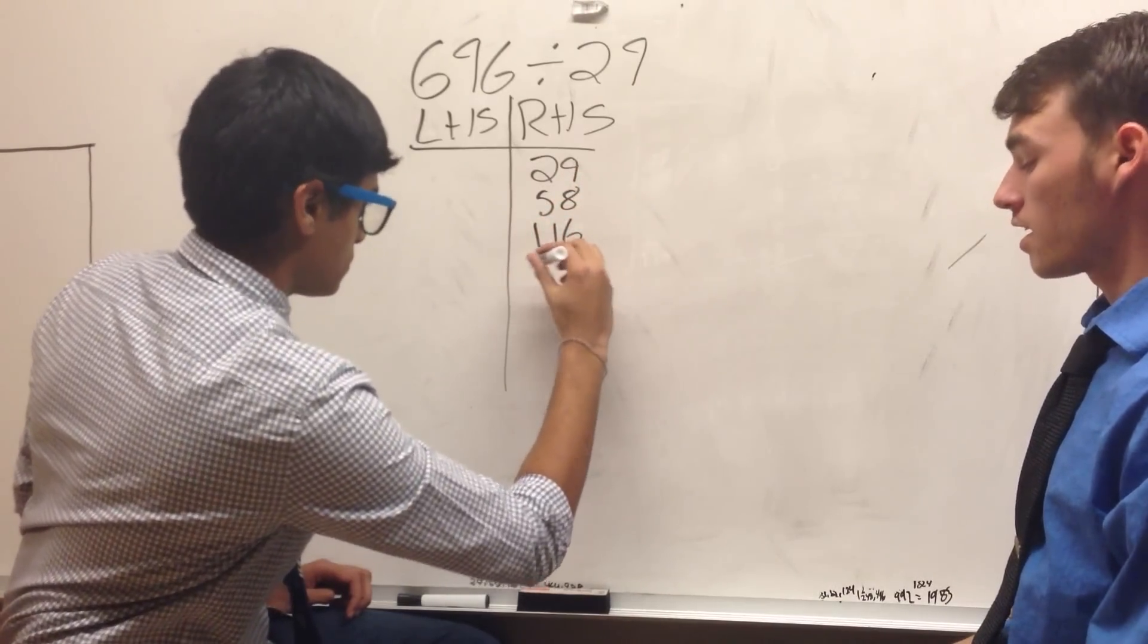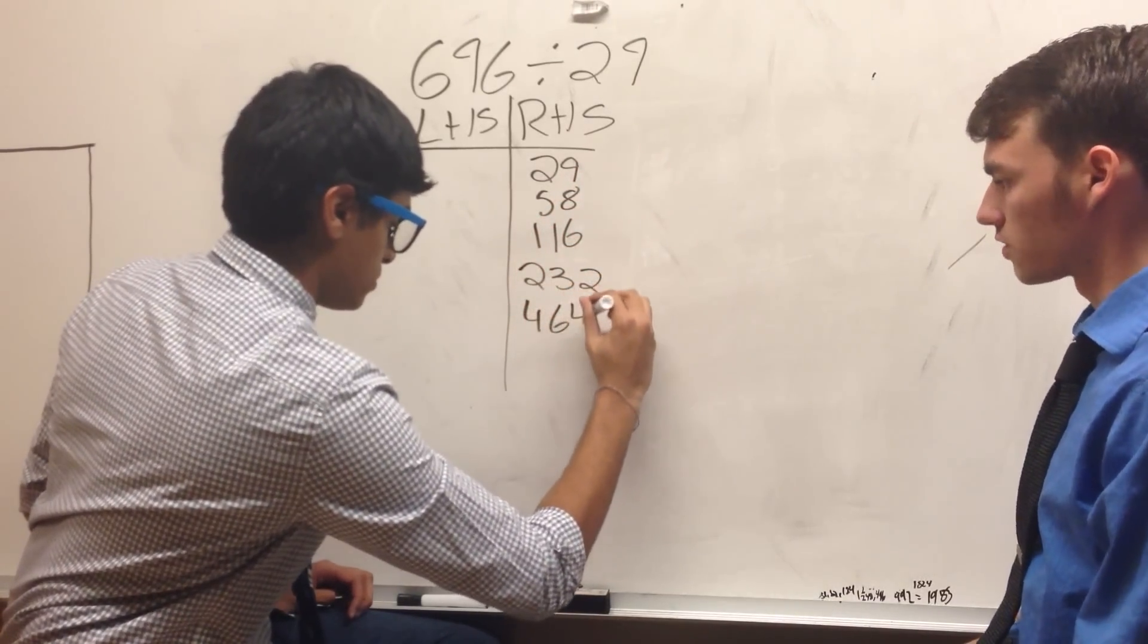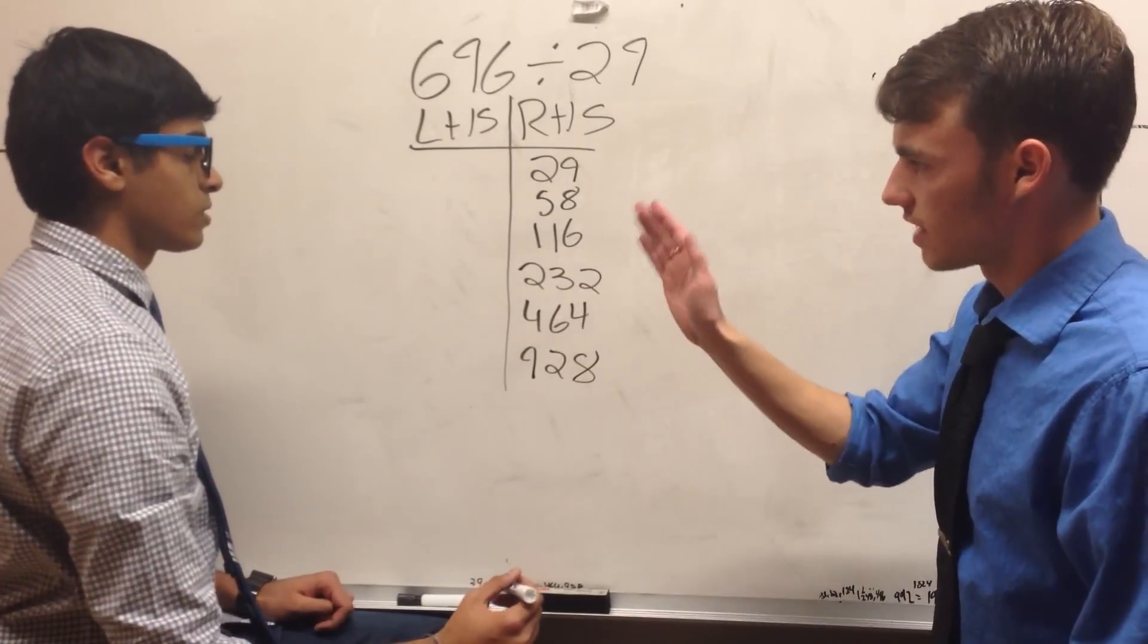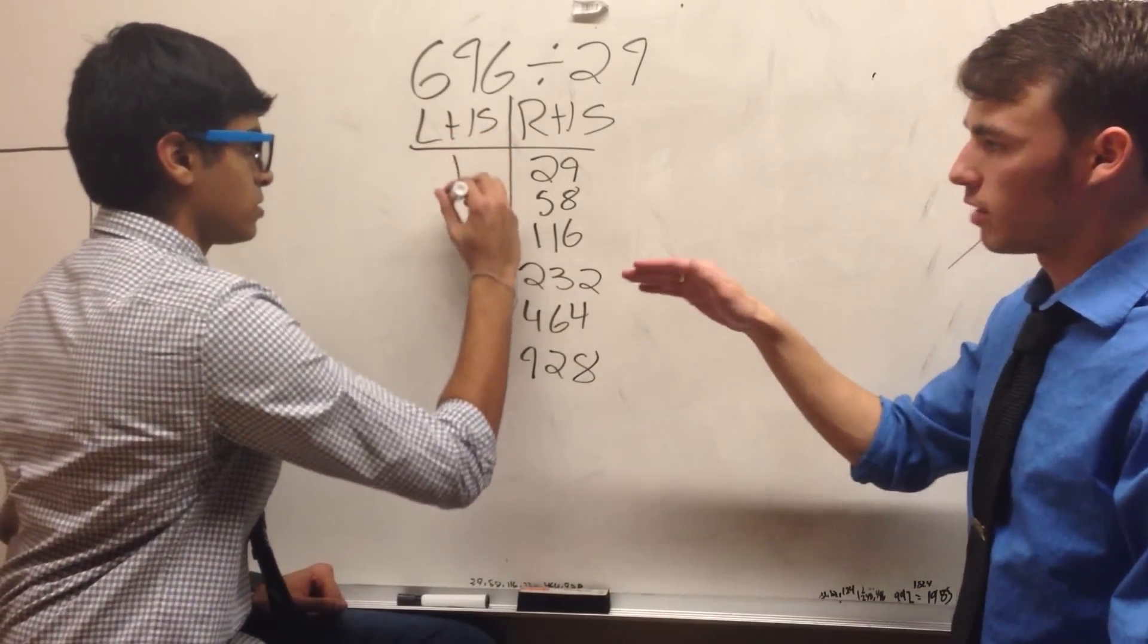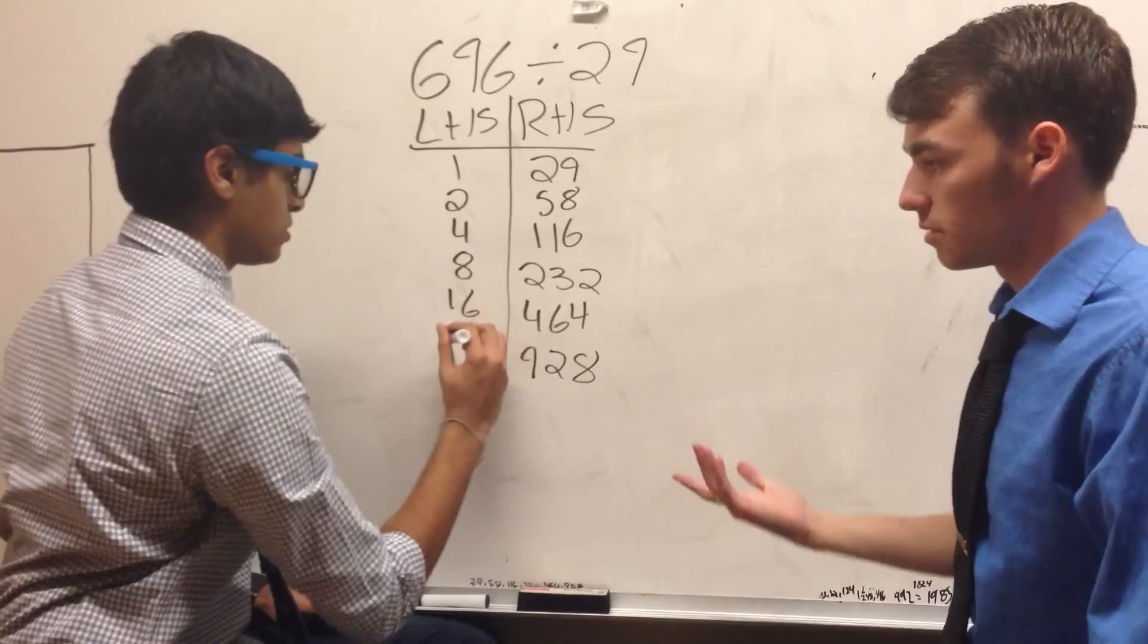Jay is going to do this, and it'll probably end up being much greater than 696 when he stops, which is fine. Now we hop over to the left-hand side, and starting with 1, we're going to double it just as many times as we doubled the number on our right-hand side. In this case, it's going to be 6 times.